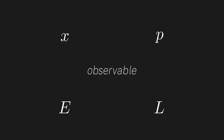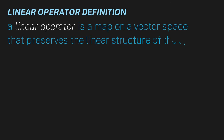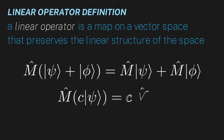Before digging into the nuance of how we represent these observables as operators, I want to remind ourselves about the formal definition of a linear operator just to make sure we're on the same page. A linear operator is a map on a vector space that preserves the linear structure of that space. In other words, a linear map satisfies the following properties: addition is still addition, and scalar multiplication is still scalar multiplication. Note that a linear operator is an abstract map, while a matrix is a representation of a linear operator in a particular basis. In quantum mechanics there is no standard basis, so that's why you almost always see us working with the abstract operators themselves.